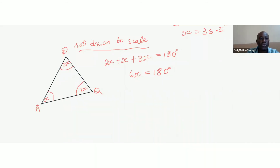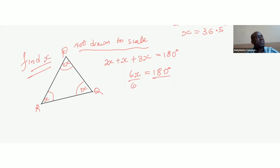We're trying to find a value for x, so we divide throughout by 6. 6 cancels and 180 divided by 6 gives 30. Therefore x is equal to 30 degrees.